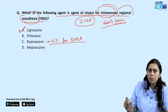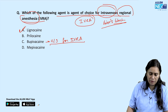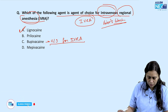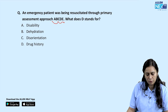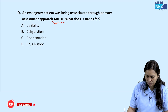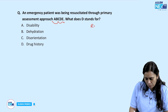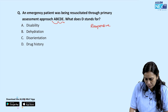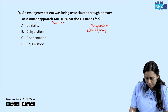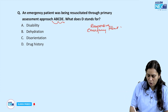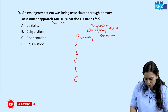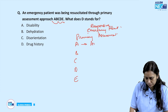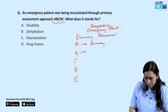The two most important facts about IVRA: bupivacaine is contraindicated, and lignocaine is the agent of choice. Next question: an emergency patient being resuscitated through primary assessment — ABCDE approach. What does D stand for? In primary assessment we use the ABCDE approach: A = Airway, B = Breathing, C = Circulation.